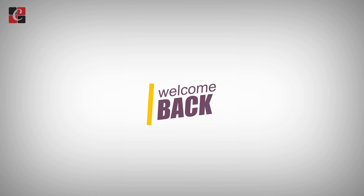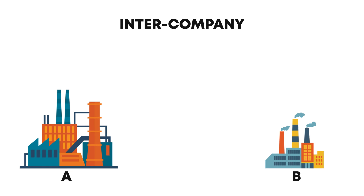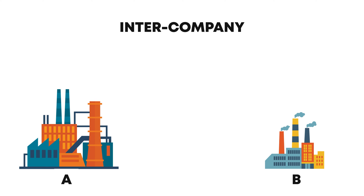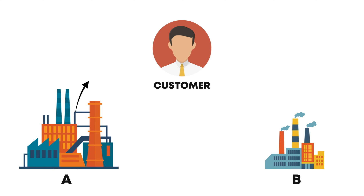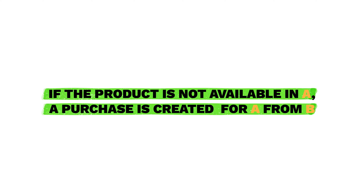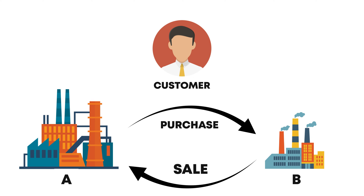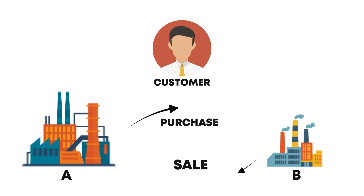Welcome back. In this video we are going to discuss intercompany sales and purchase order synchronization. Consider a parent company ABC with two subsidiary companies: Company A and Company B. Company A sells products to external customers, and Company B is a manufacturing or supplier company. Whenever Company A finds low stock, it purchases items from Company B for resale, forming an intercompany relationship. To manage these intercompany transactions, we need to set up the companies.